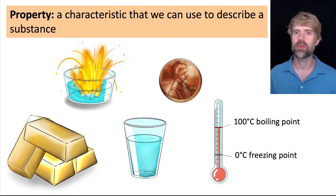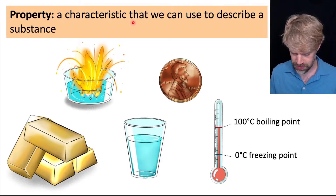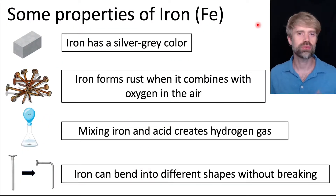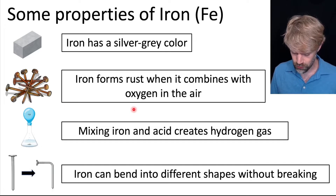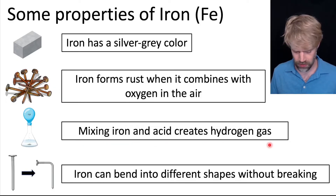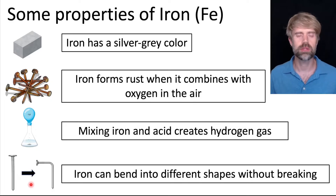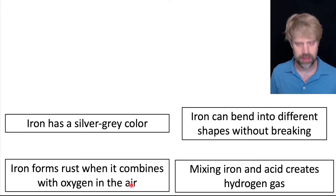In chemistry, we often talk about the properties of a substance. A property is just a fancy word for a characteristic that can be used to describe a substance. For example, here are some of the properties or characteristics of iron metal. Iron has a silver gray color. Iron forms rust when it combines with oxygen in the air. Mixing iron and acid creates hydrogen gas. And iron can bend into different shapes without breaking. These are all properties we can use to describe iron.